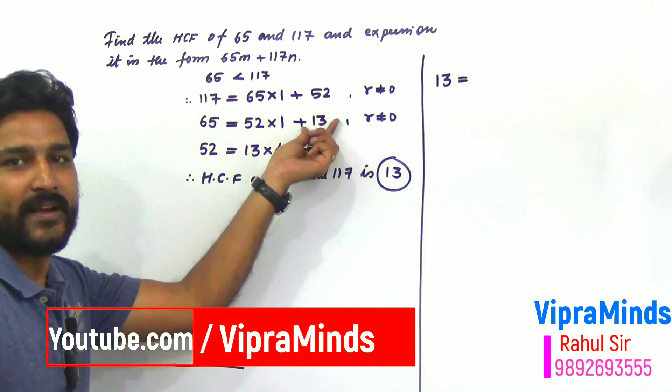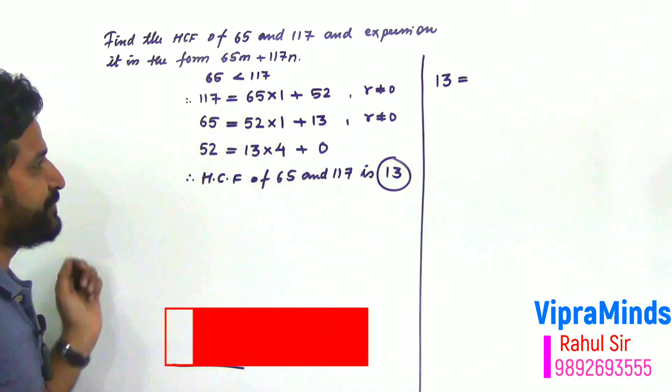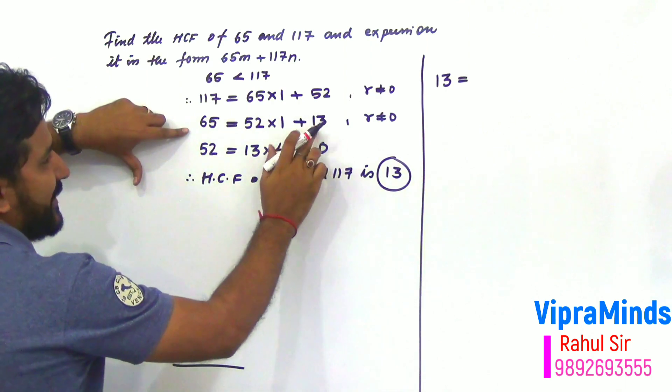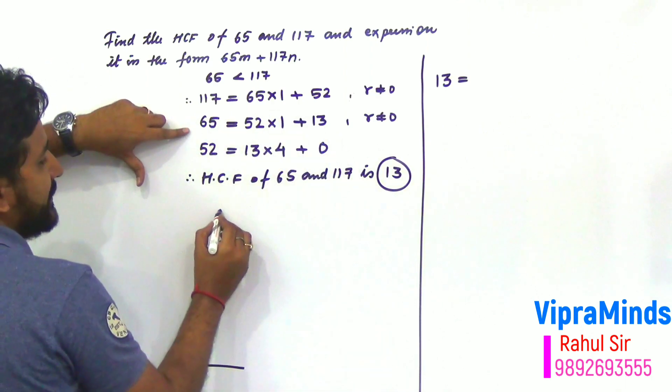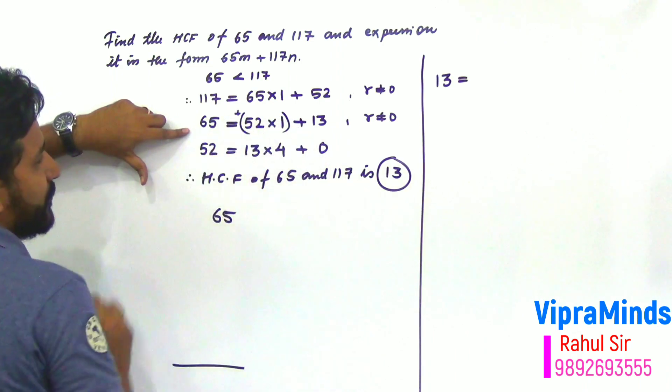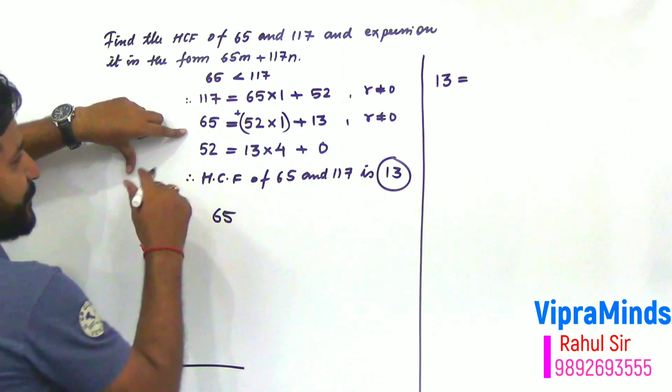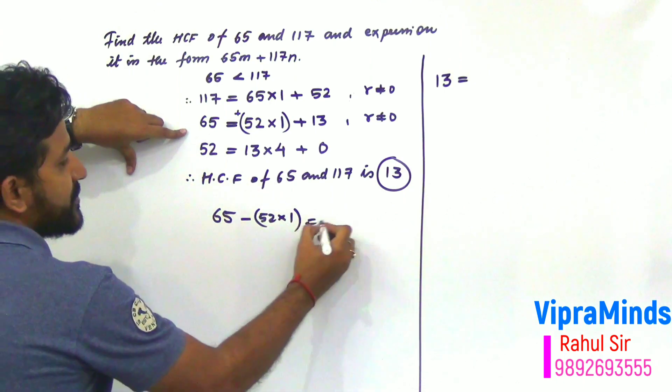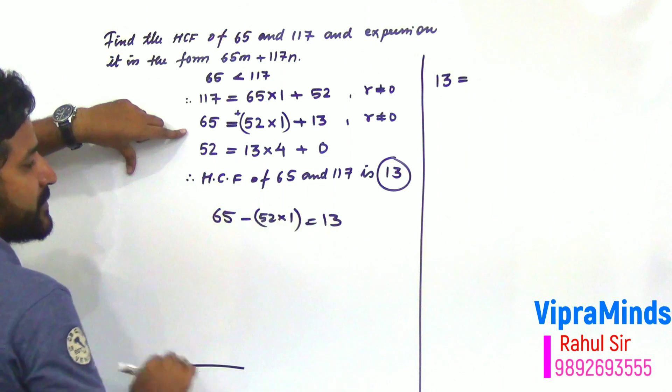So, we will make 13 subject and proceed. If I make 13 subject, that is, 13 equals to what? 65 and this is 52 into 1. Here no sign means plus. If we shift it, it will be minus 52 into 1 equals to 13.